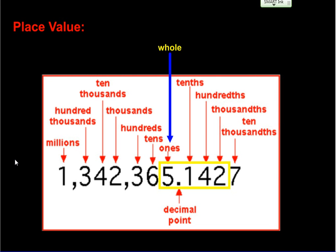The next thing we need to review is place value. The ones place is always to the left of the decimal and can also be referred to as a whole number — if you're asked to round to the whole number, you're being asked to round to the ones place. The other place values we need for tonight's homework are the tenths place (first digit after the decimal), the hundredths place (second digit after the decimal), and the thousandths place (third digit after the decimal).